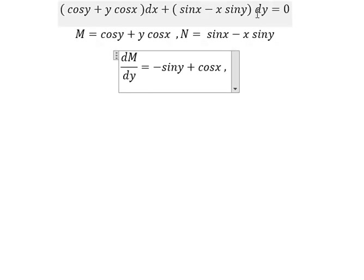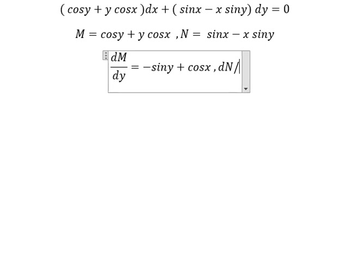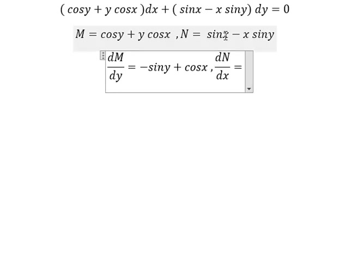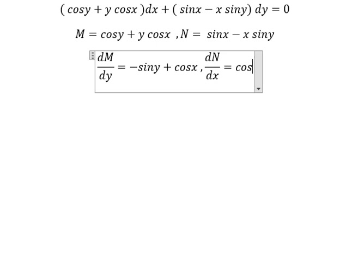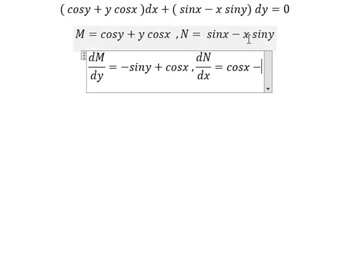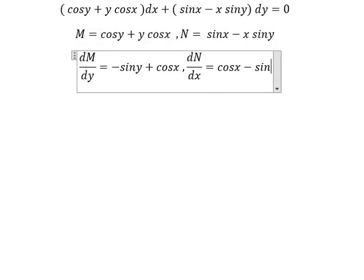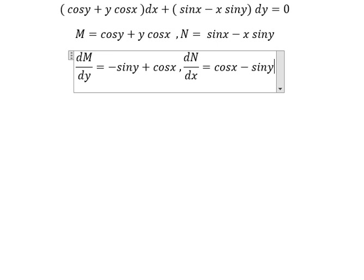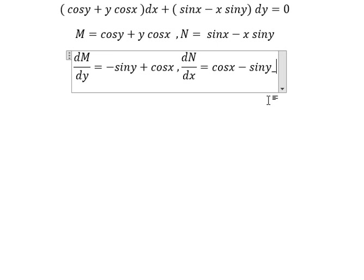Next we have dN/dy, that means we need to do first derivative of N with respect to x. So this one we have cosine x, this one we have number one. So we can see that this one and this one they are same, so that is about exact.